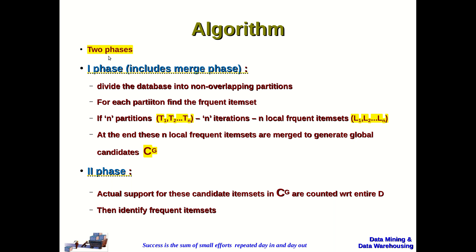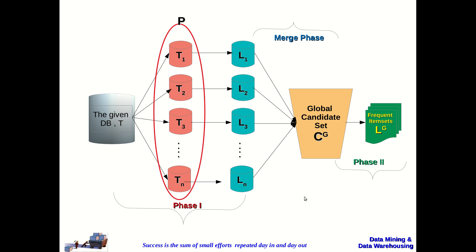The algorithm has two phases, with the first phase also including a merge step. In phase 1, the database is divided into partitions T1, T2, up to Tn, and local frequent item sets L1, L2, up to Ln are found for each partition. These are merged to generate a global candidate set CG. In phase 2, the support count for candidate item sets in CG is counted with respect to the entire transaction database to identify the final frequent item sets.